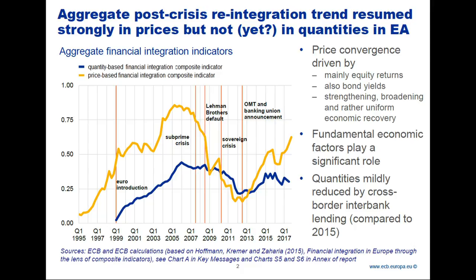What we see is a significant recovery in the price-based indicator — a sharp increase in the yellow composite price indicator. Quantities tend to move slower than prices. This is a continuation of a post-crisis reintegration trend that started in mid-2012, following the path-breaking council meeting where the banking union was agreed. Last year we reported kinks — stops in this trend around 2016 during times of political uncertainty in Europe. But now the trend has resumed, particularly in prices.